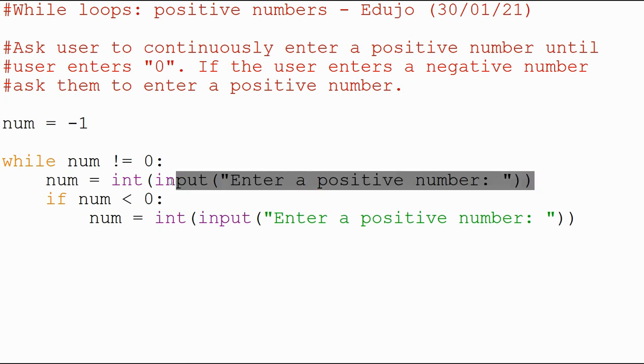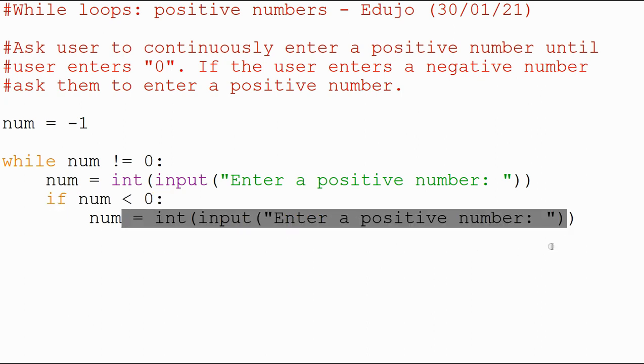So we asked them to enter a positive number if it's not—it's a sort of little error check. If it's a negative number, that means less than zero, then we ask them again to enter a positive number. Otherwise, or else, we're going to say that they have entered